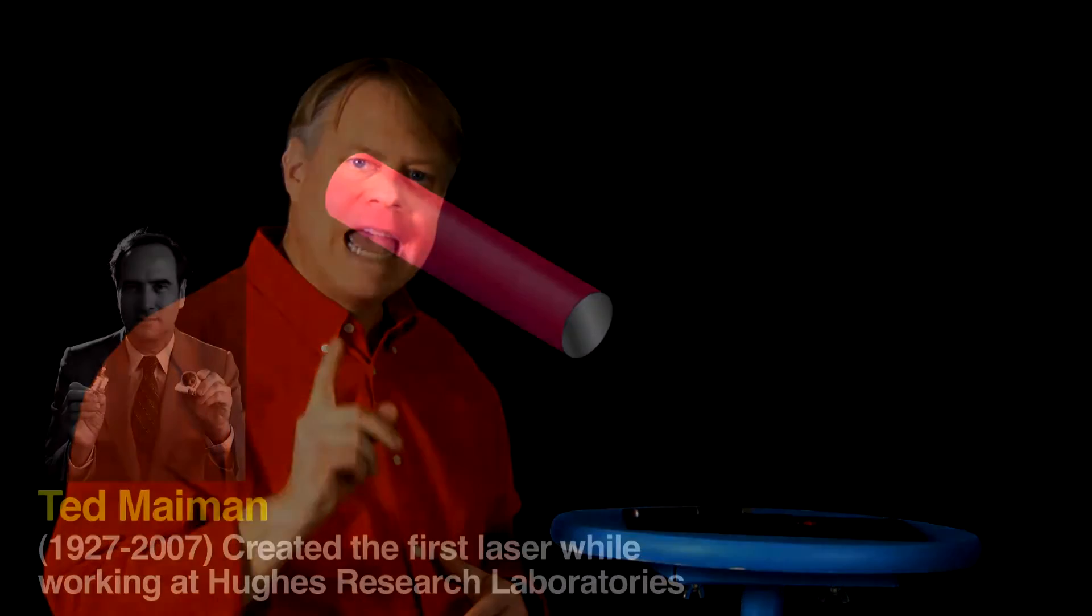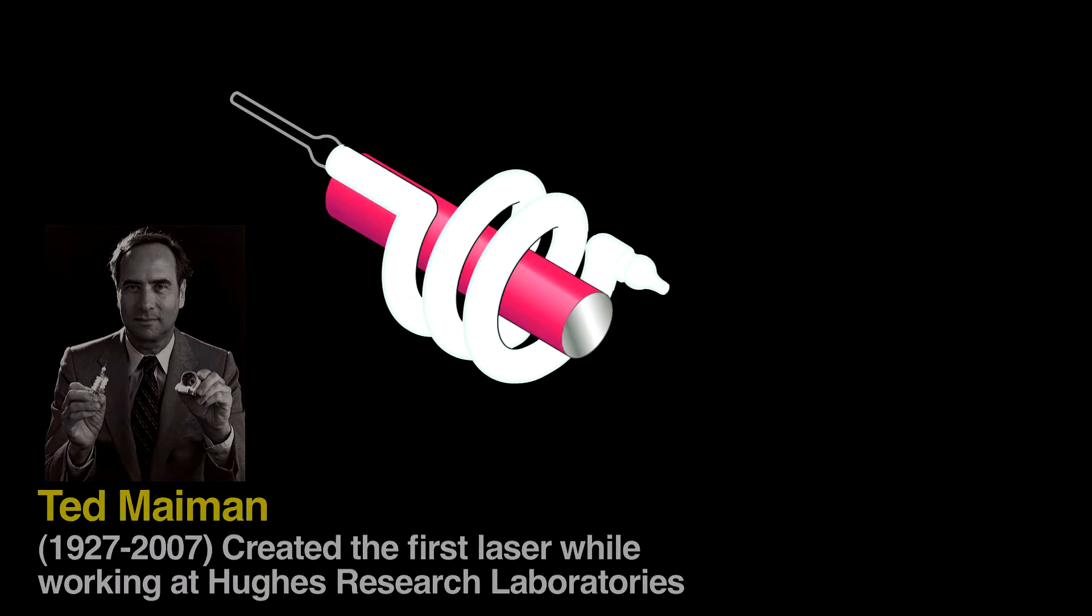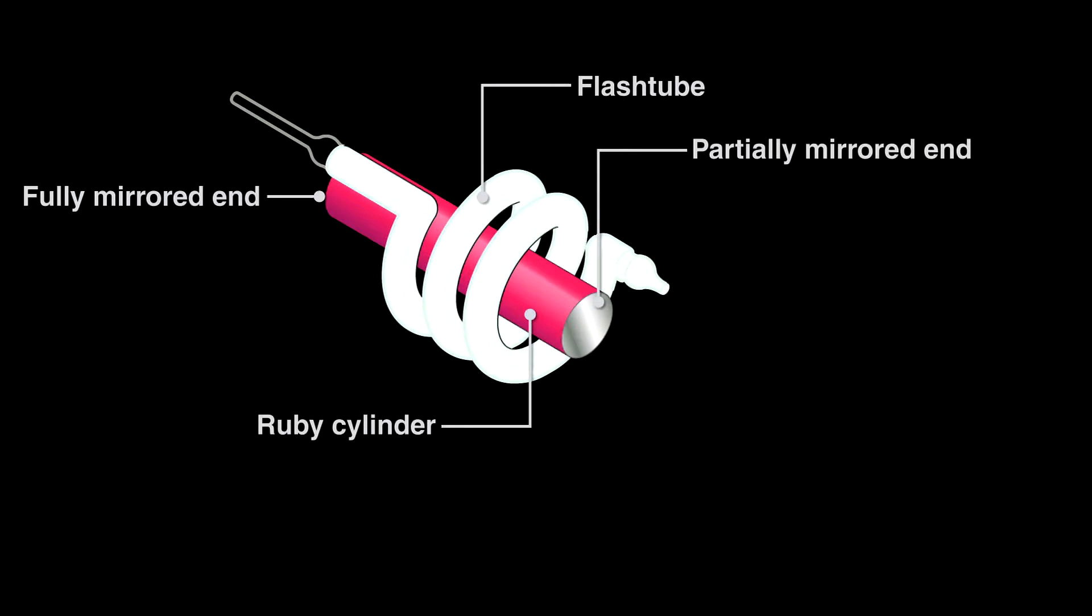In 1960, Ted Maiman demonstrated the first laser by taking a cylinder of ruby and surrounding with a xenon arc flash lamp used in aerial photography. An intense burst of light from the lamp initiates lasing.